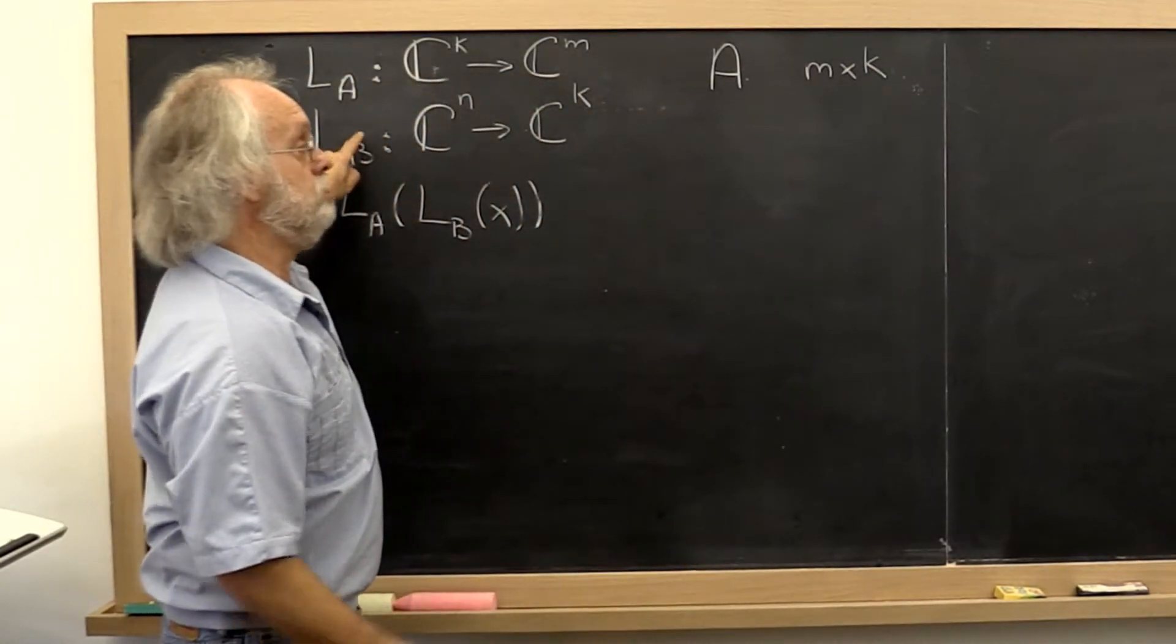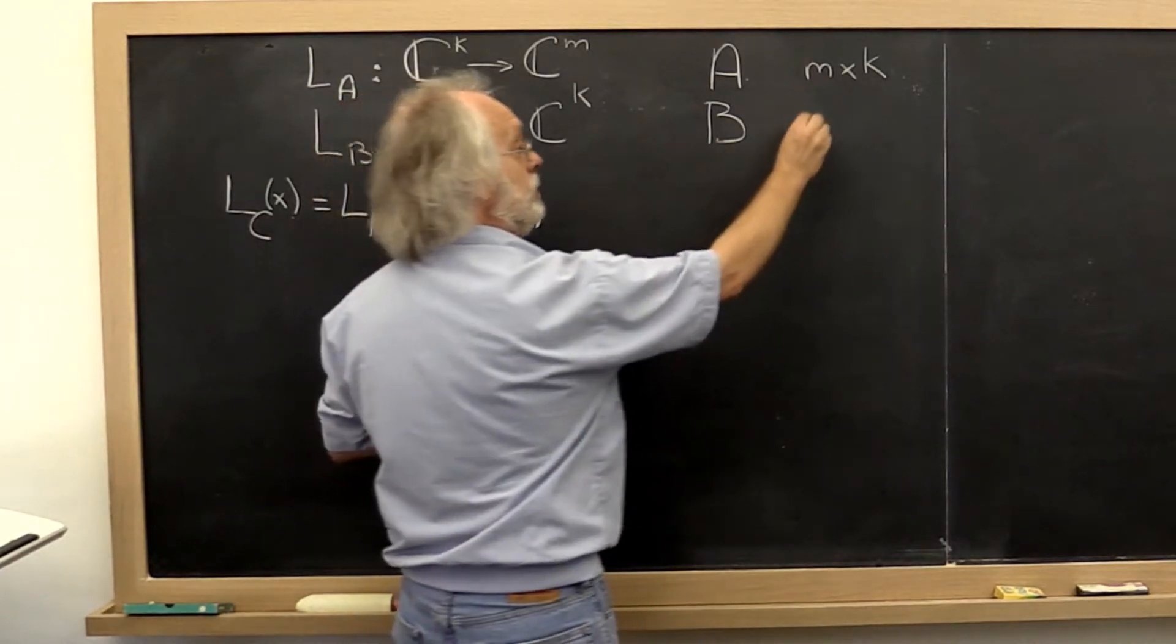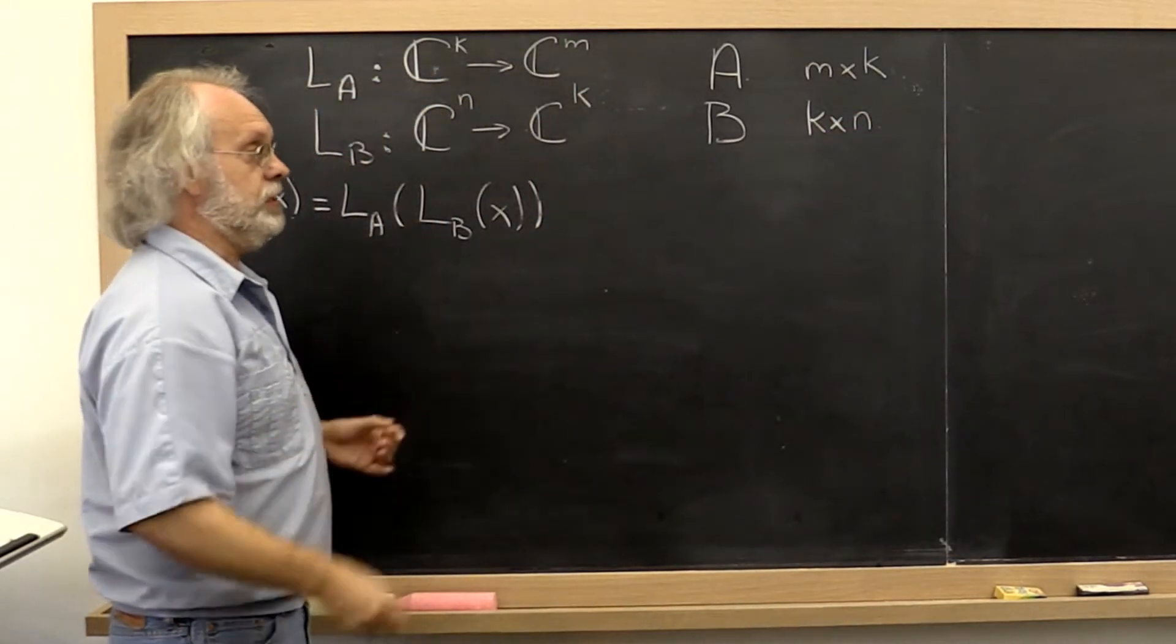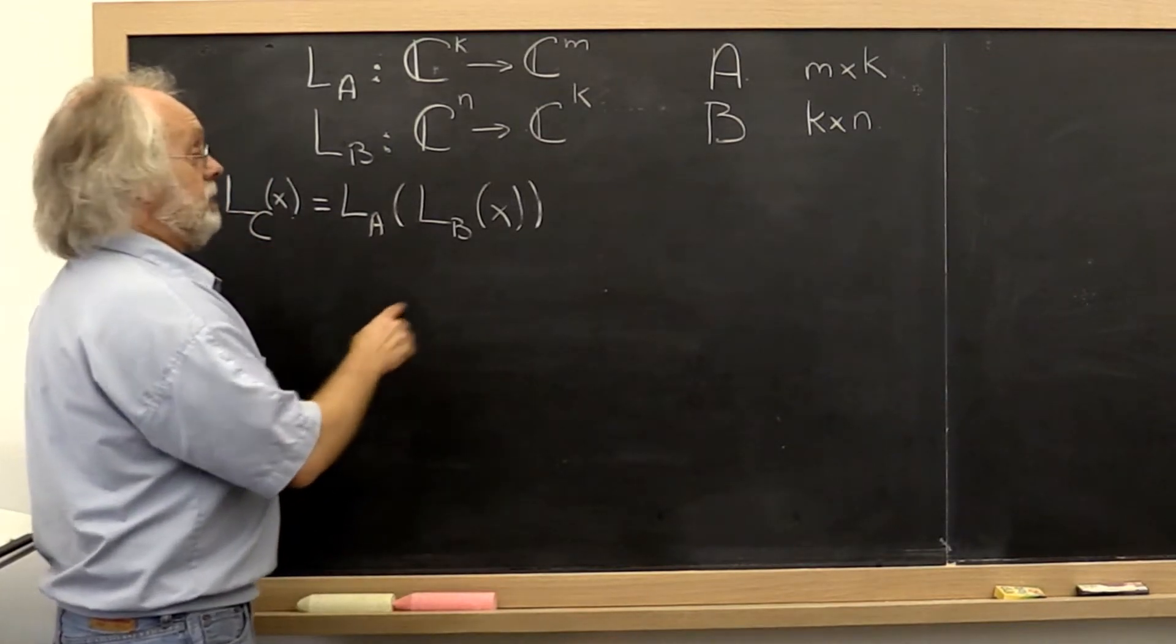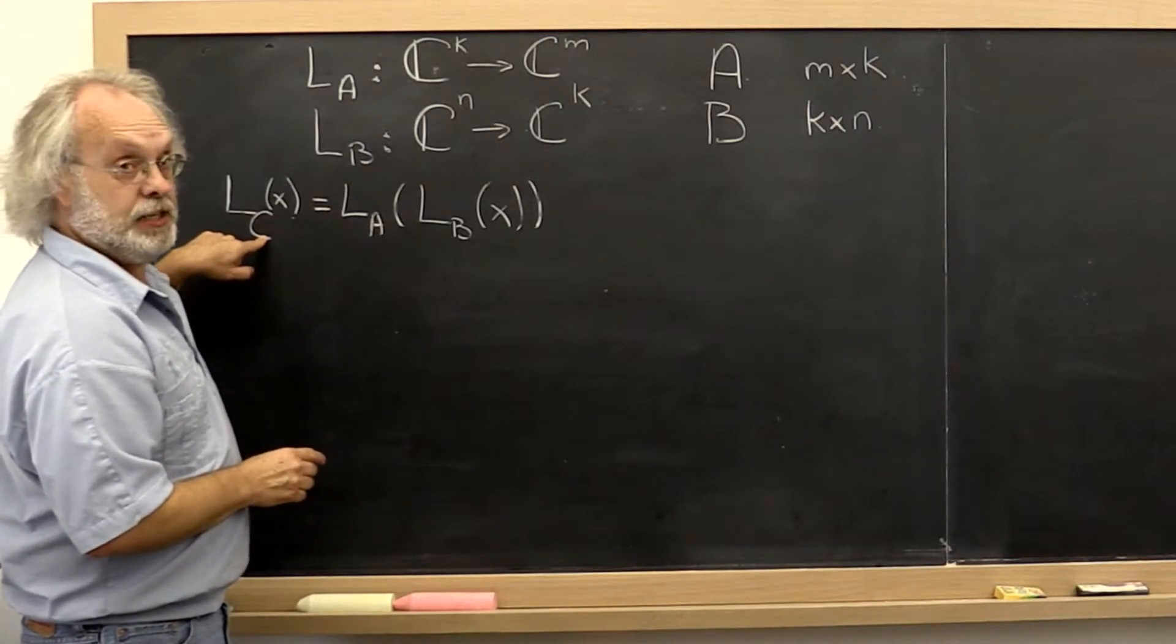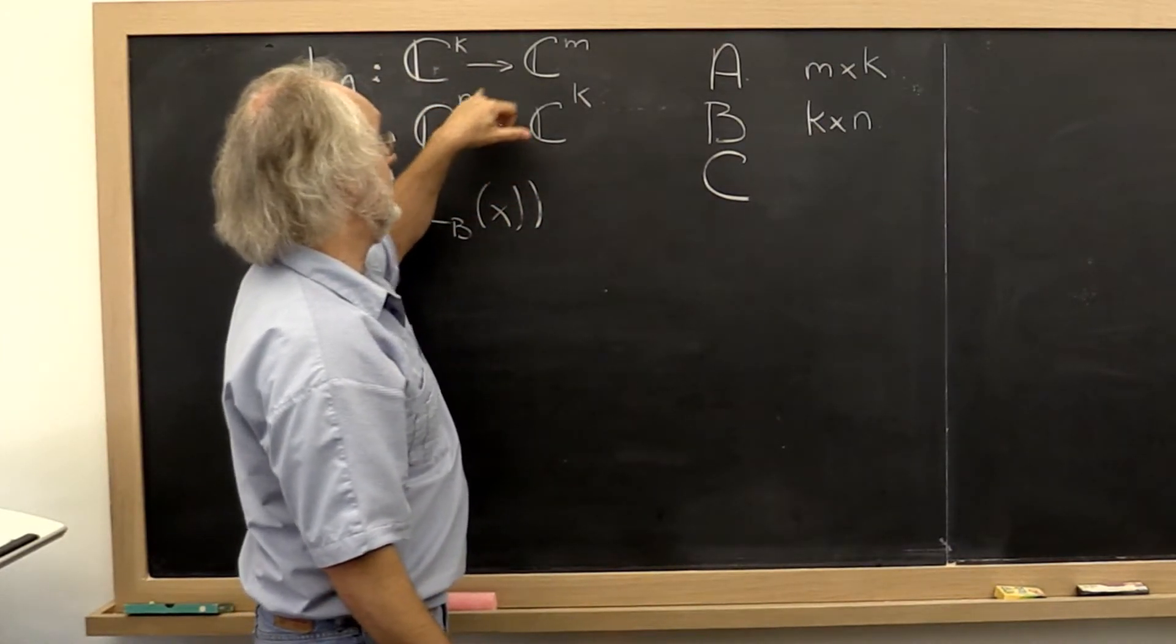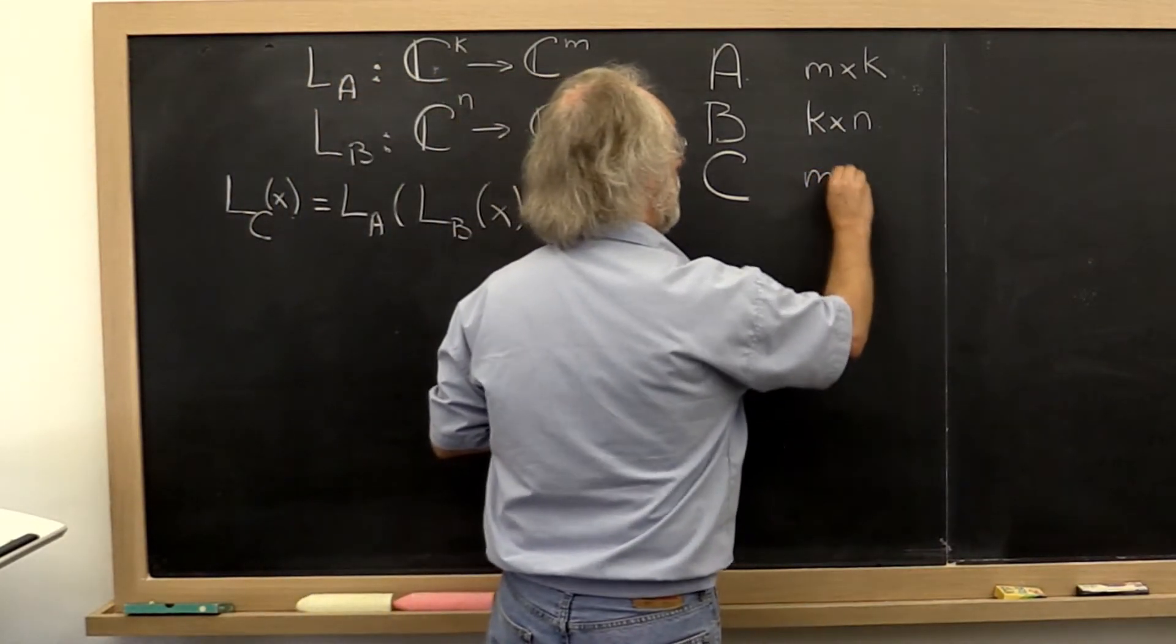And then we can have a matrix B that can be represented by a k by n two-dimensional array matrix. And notice then that there should be a matrix that represents L_C. Let's call it C. That takes as input a vector of size n and gives as output a vector of size m, so it would be an m by n matrix.